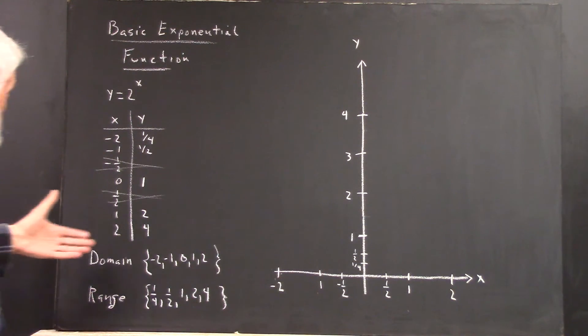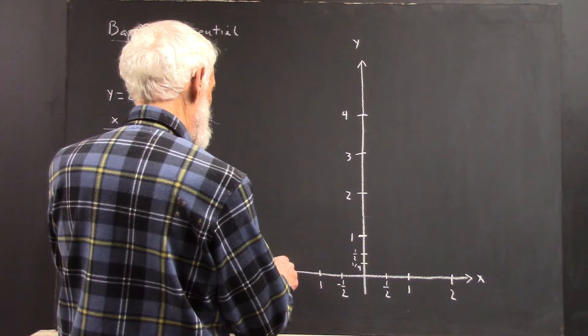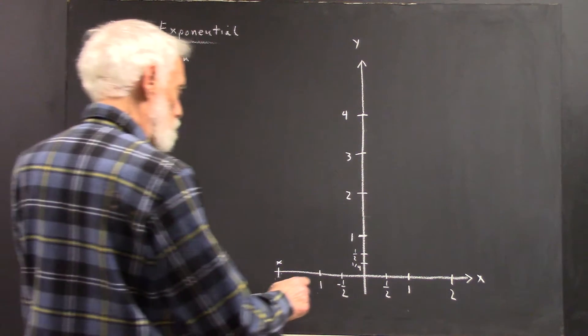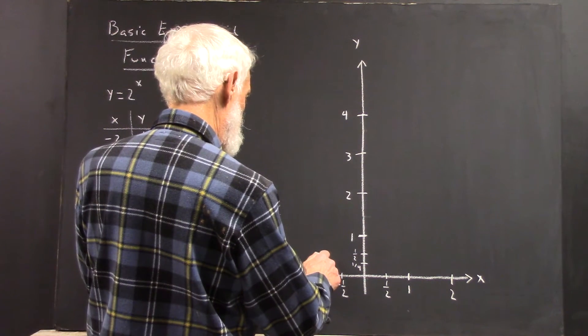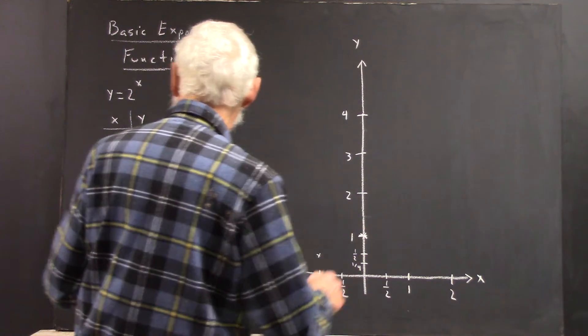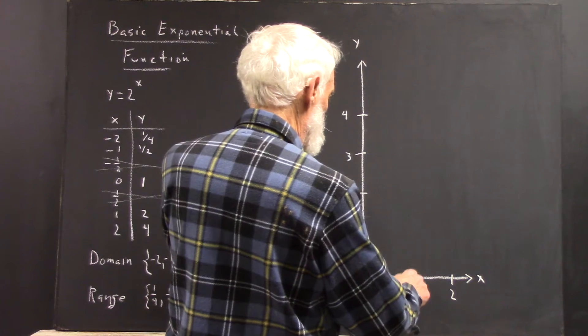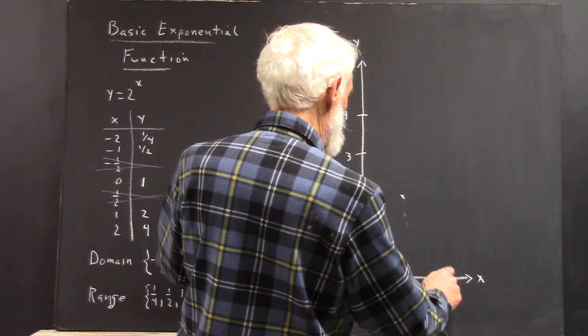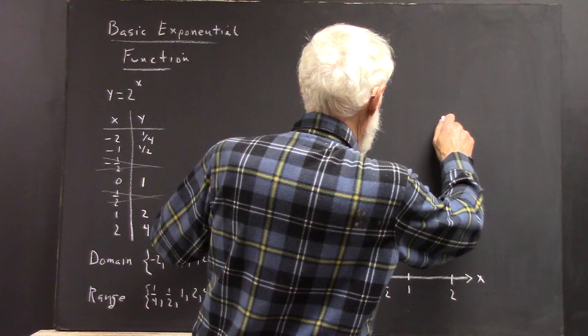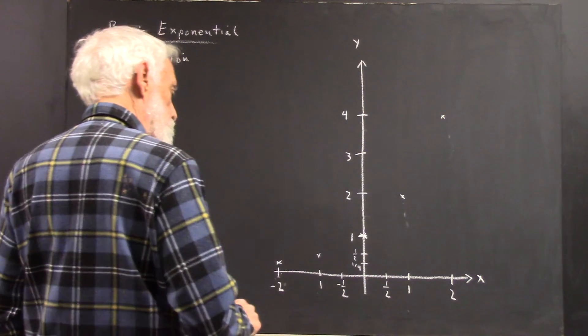So, I plot my points. Negative 2, 1 fourth gives me a point about here. Negative 1, 1 half gives me a point about here. 0, 1 is about here. 1, 2 is going to be about here. And 2, 4 will be above 2 across from 4.